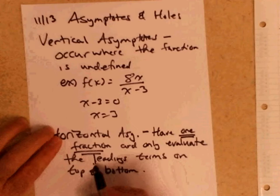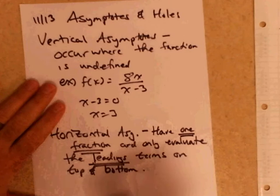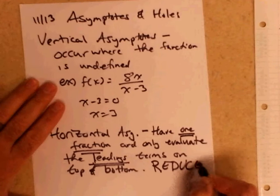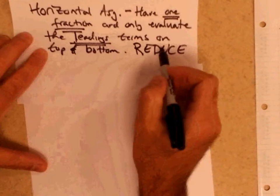The leading term — the highest degree term on top and the highest degree term on bottom. You can disregard the rest of the problem when you evaluate horizontal asymptotes. After you set this up, you have to reduce the fraction. You'll create a singular fraction. If you don't reduce the fraction, these rules fall apart, but they're fail-proof if you follow these rules. Make sure you have one fraction and reduce the fraction.